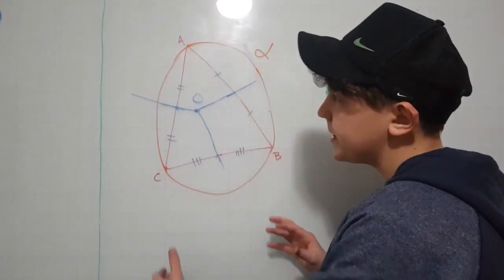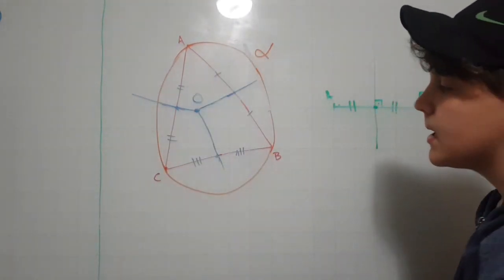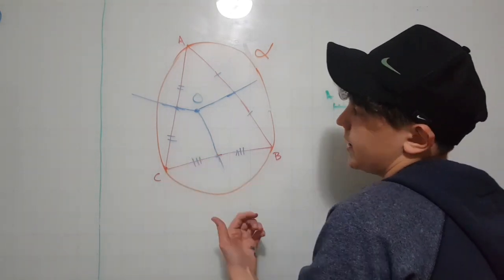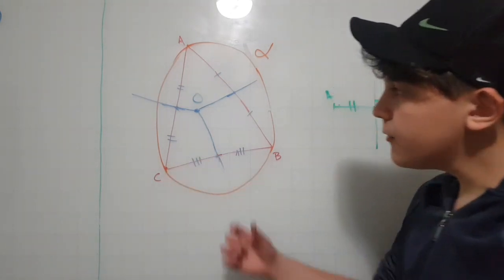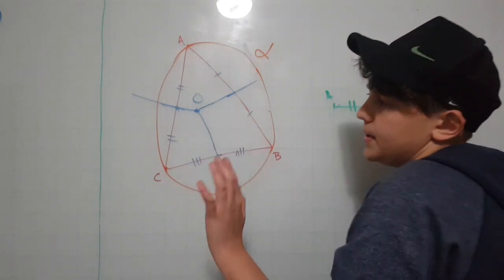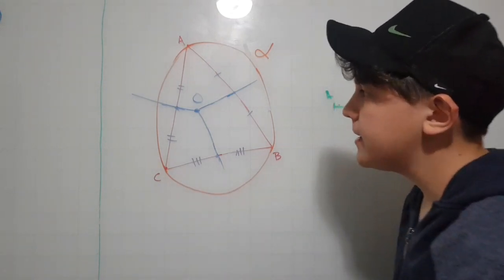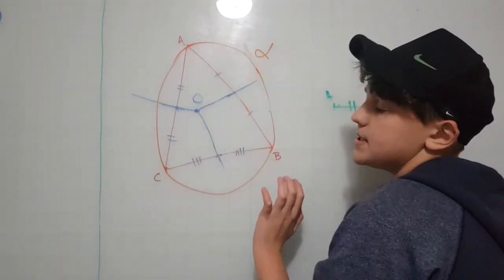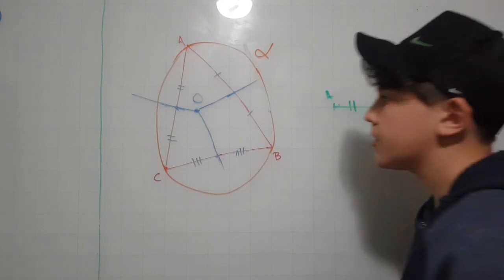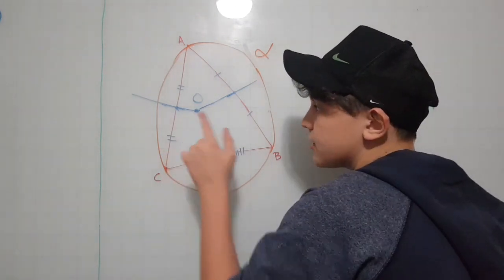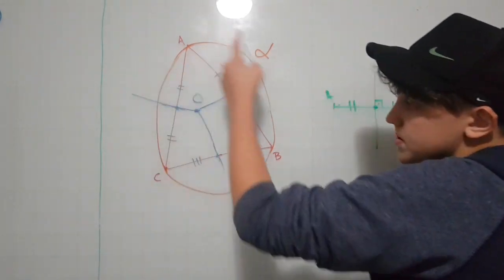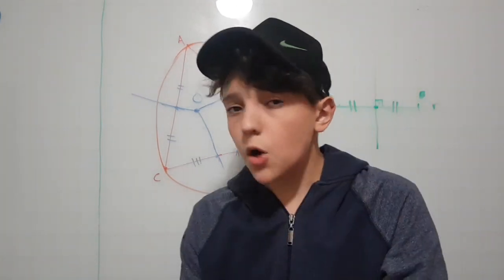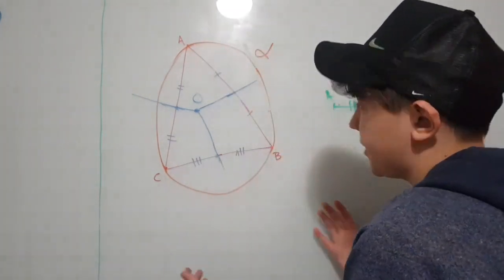I'm here to talk to you about a property of the circumcenter of a triangle. I'm going to talk about a triangle ABC on a plane — any triangle can be ABC — with a circumcenter O and a circumcircle named alpha.